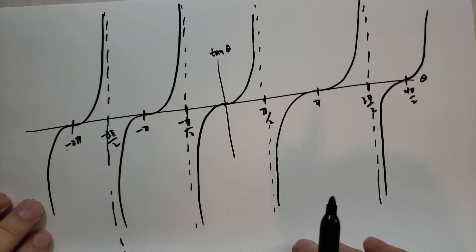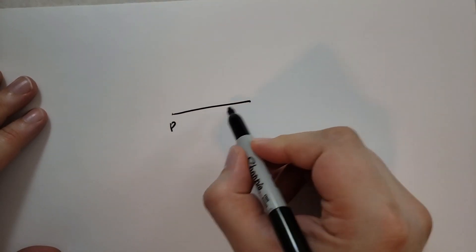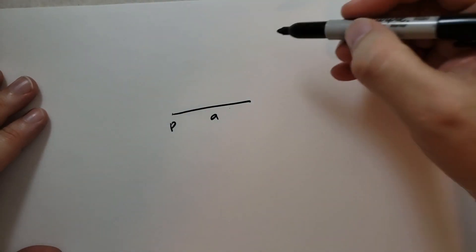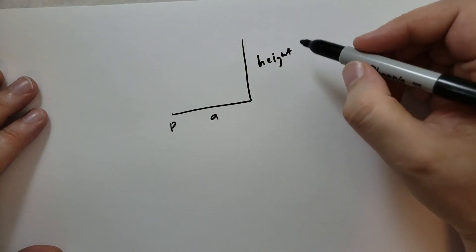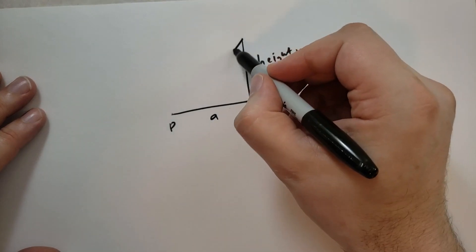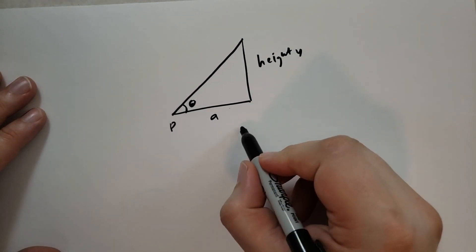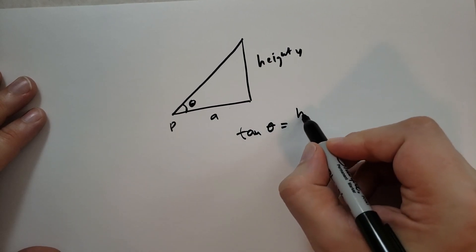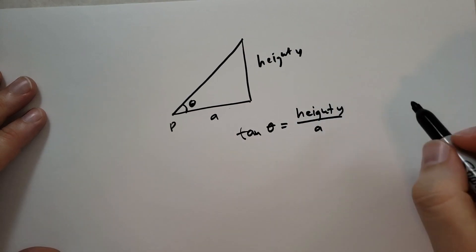What do we use tangent for? Well, we have these problems. So suppose we want to determine the height of a tower without climbing the tower. So we are standing here at point P. We see that the tower is a distance A away. And then we have the tower of a certain height. The height is Y. And we don't want to climb the tower. So we look at the angle theta here. And then we note that tangent of theta is going to be the height Y divided by A.